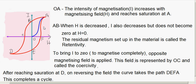Now let's see what happens when you decrease H. When you decrease H, I also reduces, as shown in curve AB. But at point B, it is clear from the graph that H is 0, but I has not reduced to 0. That means the intensity of magnetization is lagging behind the magnetizing field.